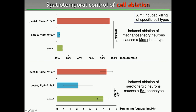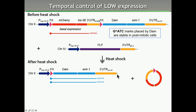The last example is temporal control of low-level expression, which is what we need for DAM-ID experiments. We are now using a heat shock promoter to drive expression of the flipase. One important consideration for DAM-ID is that once the methylase adds methylation at an adenine, this mark is stable until DNA replication. So the DAM-ID experiment is essentially a summary of all methylation events across the life of the cell, and if we want to study nuclear organization during aging we need to activate DAM-ID only at the time we want.